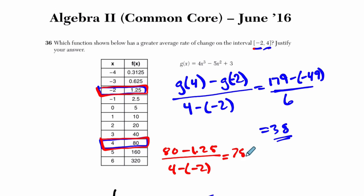That's going to be 78.75 over 6, which is 13.125, which is less than 38. So g of x, you can say, and let me circle that in blue, circle that in blue.